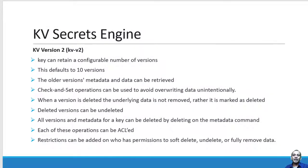Let us understand how the key-value secret engine version 2 works. By default, version 1 will get created, and version 2 can be created explicitly. Version 2 has advantages: it can maintain history, there is a special option called check-and-set operation which protects users from overriding data unintentionally. Also, whenever data is deleted, it does a soft delete, and data can be destroyed without retaining history. We will see all these operations through a demo using CLI, UI, and API. In this lecture, we will cover the CLI and the UI.